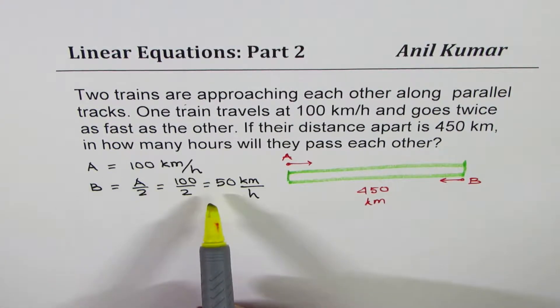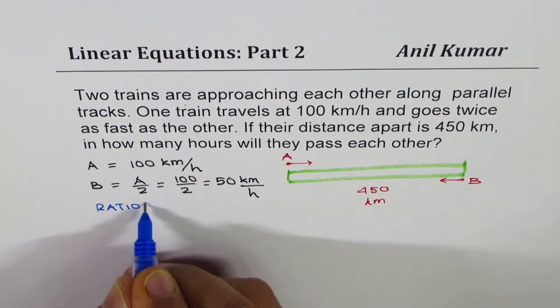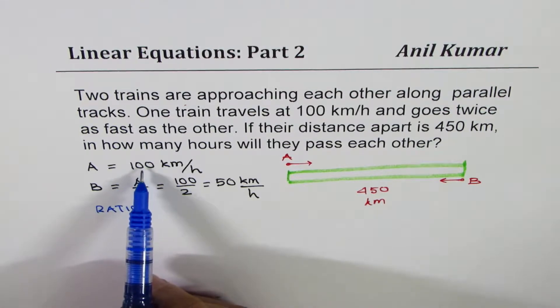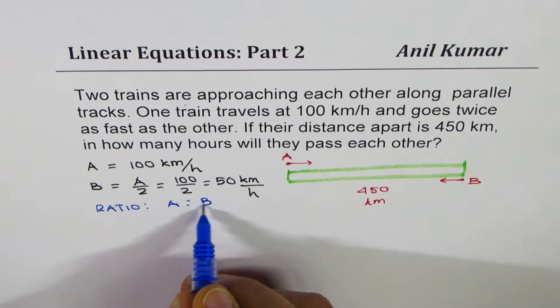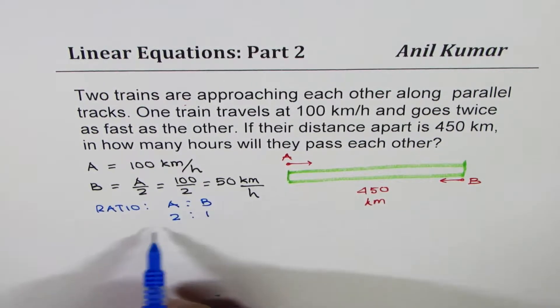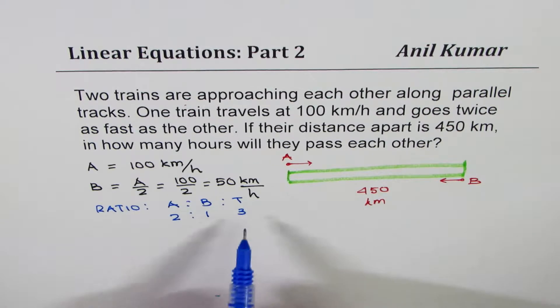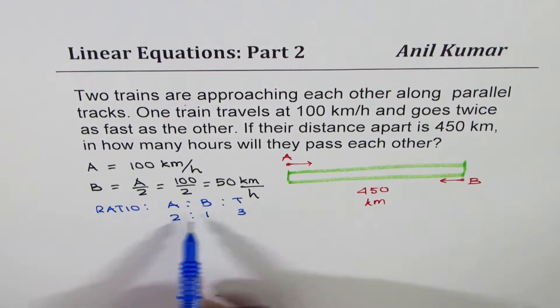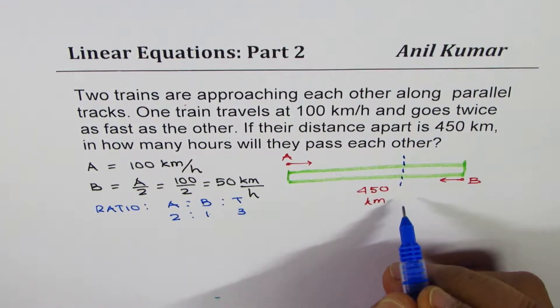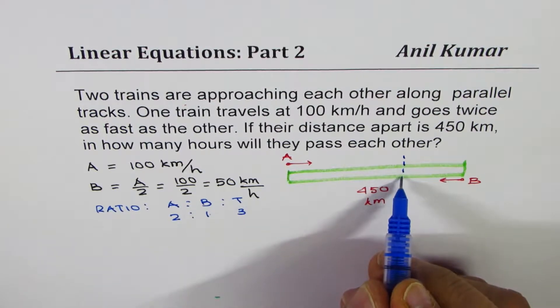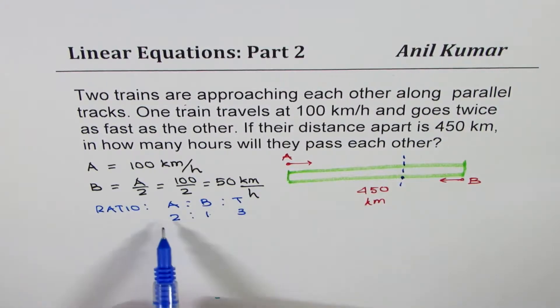Now we could do it in many different ways. We could actually also adopt a method of ratios. Since A is travelling twice with respect to B, ratio of A to B is actually 2 is to 1. So if the total distance is T, which in case is 3, then A will cover twice the distance as B. So somewhere here they are going to meet. This distance is such that their ratio of A and B is 2 is to 1.